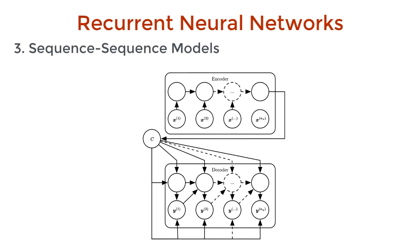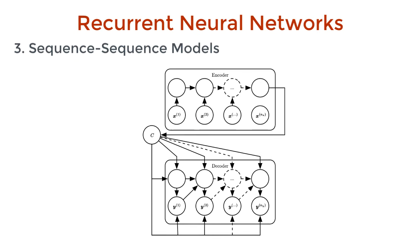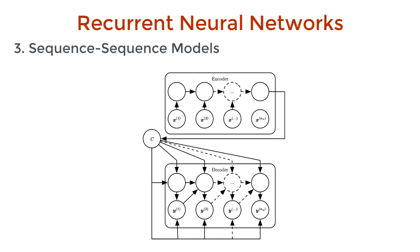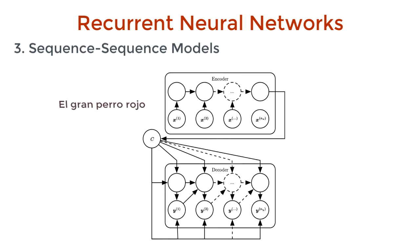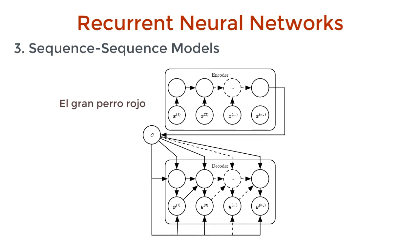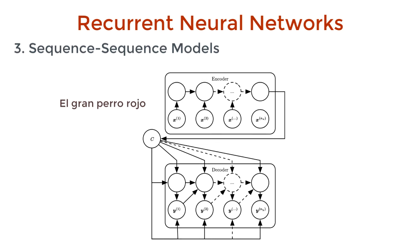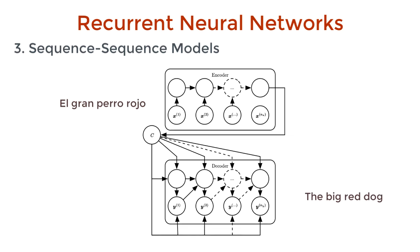Sequence-to-sequence models is the more popular variant. These neural networks take in a sequence as input and output another sequence. For example, language translation. The input could be a sentence in Spanish, and the output is the translation in English.